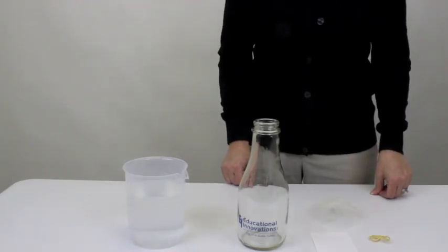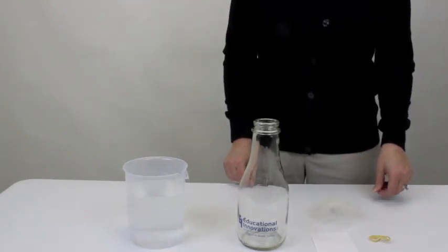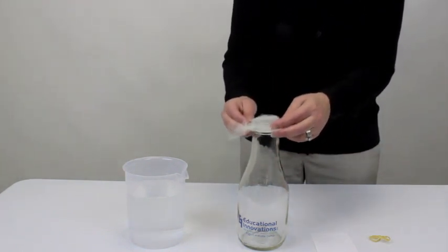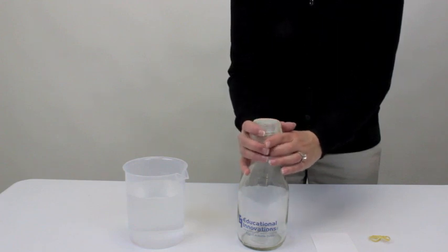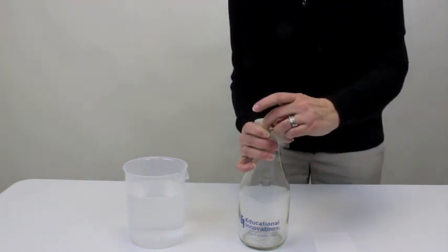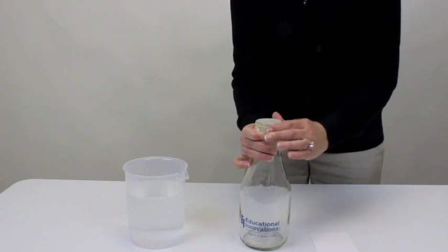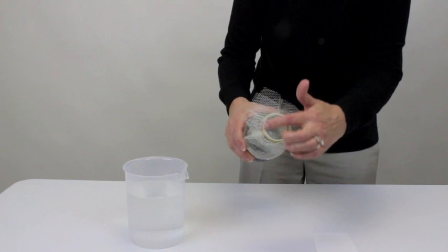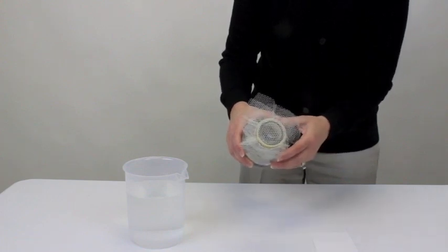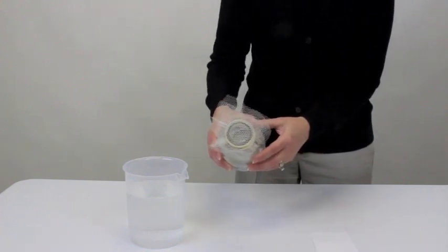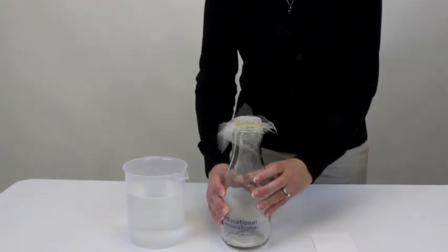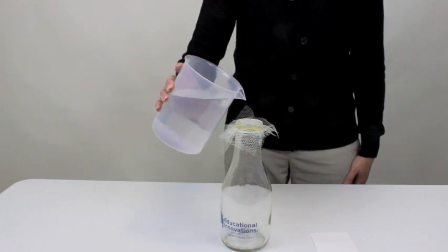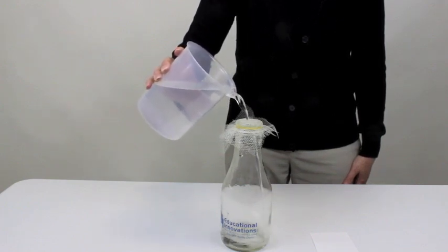The first activity we're going to do deals with air pressure and surface tension. We're going to take a piece of mesh that comes with the egg bottle from Educational Innovations, and we're going to place it on the top and secure it with a rubber band. You can see that there are a number of holes that will allow air in and air out. If I take water and I pour it through the milk bottle neck, you can see that it pours through freely.